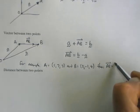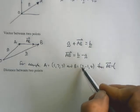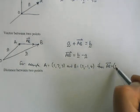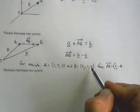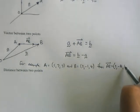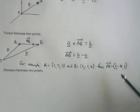Then the vector in between these two things, which we're going to call AB, is B minus A. So it's going to be 2 take away 1 is 1, negative 1 take away 7 is negative 8, and 4 take away 3 is 1.